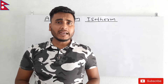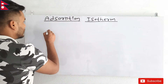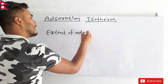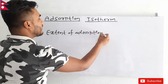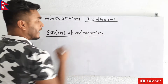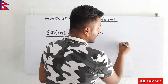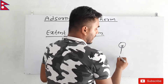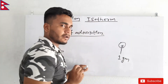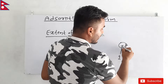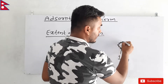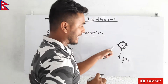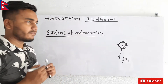First of all we need to understand about extent of adsorption. So what is actually extent of adsorption? Let us understand this by a figure. Suppose this is a solid having a mass of one gram — its mass is one gram. Now if some gas molecules are adsorbed on it,